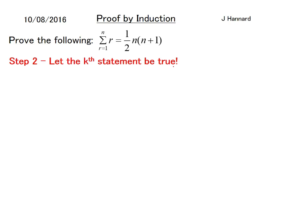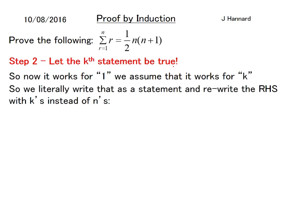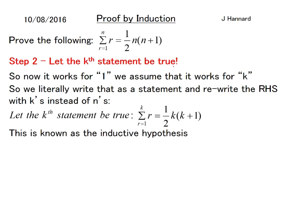Step 2, let the kth statement be true. Now this is just part of the script to induction. If it works for 1 we can assume it works for k numbers. So we literally write that as a statement and rewrite the right hand side with k's instead of n's. So let the kth statement be true: the sum from 1 to k equals a half of k times k plus 1. This is known as the inductive hypothesis.